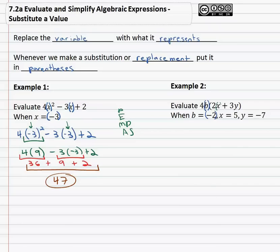Well, we can simply replace the b with the negative 2 it represents, we can replace the x with the 5 it represents, and we can replace the y with the negative 7 it represents. When we do all that, we get 4b which is now negative 2, times 2x which is now 5, plus 3y which is now negative 7. Notice we have the exact same expression, we've just replaced each variable with the number it represents.